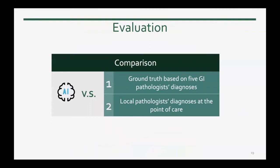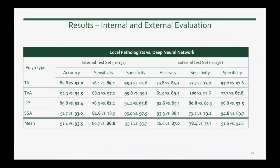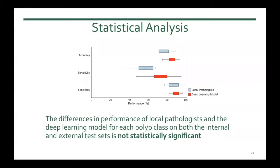For evaluation, we compare the results of our model to ground truth labels based on the majority vote of five GI pathologists. We also compare our results to local pathologist diagnoses parsed from pathology reports. The evaluation for both internal and external datasets is summarized in a table showing accuracy, sensitivity, and specificity for each type of polyp and overall. In all cases, either our model performance is slightly higher than the local pathologist, or performance is pretty close. Statistical analysis shows the difference is not statistically significant, so local pathologists and our model are on par on both datasets.